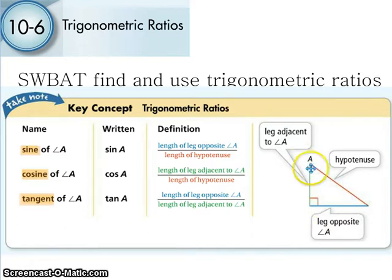Now, you'll notice whenever we talk about adjacent we're not dealing with the hypotenuse. So we have sine, cosine, and tangent. We're going to be able to do several things with this.